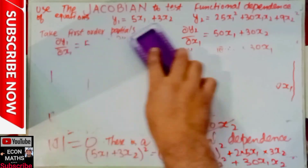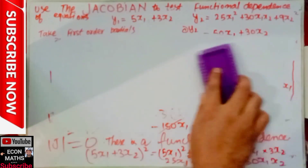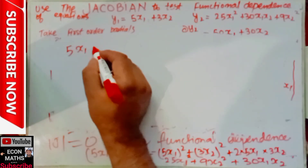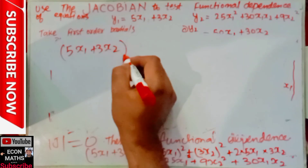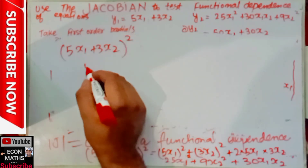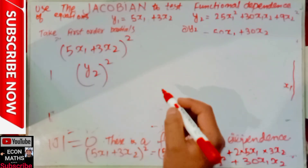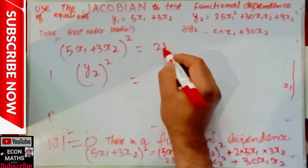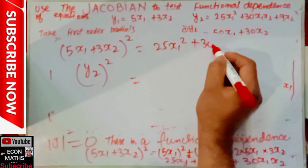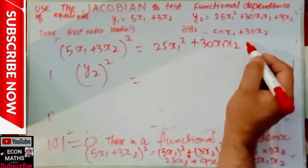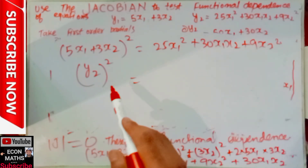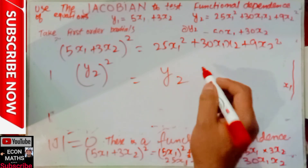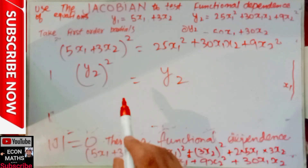So we can write clearly: y1 = 5x1 + 3x2. The square of this equation — that is, (y1)² — gives us 25x1² + 30x1x2 + 9x2², which means the square of the first function is equal to the second function. So there is functional dependence between this system of equations.